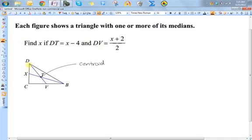So the way I'm going to start this is I know that DT plus TV equals the length of the entire median, DV. So right now, I have far too many variables here. I have DT, DV. I know something for those, but I don't know anything for TV.